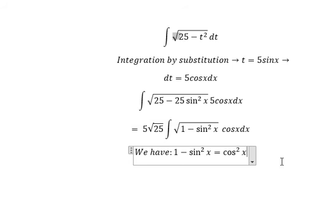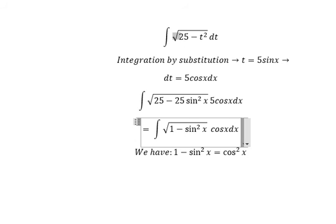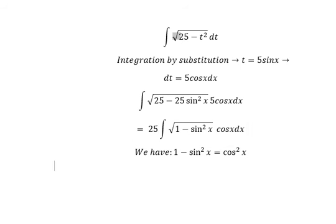So we change this way. Square root number 25 is about 5, so 5 multiplied by 5 you got about 25. This one we change to the cosine x and we have cosine x dx.